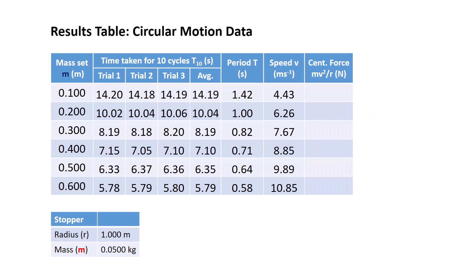Finally we want to calculate the centripetal force. As we know, centripetal force is equal to mv squared on r, where importantly m is the mass of the rubber stopper shown in red of 50 grams or 0.05 kilogram, r is the radius of the rubber stopper being one meter, and the speed is taken from the previous column that we just calculated. So this first particular cell for the 100 gram mass set, I'm going to have a calculation of 0.05 times 4.43 squared over 1, and I repeat that for all the different mass sets.